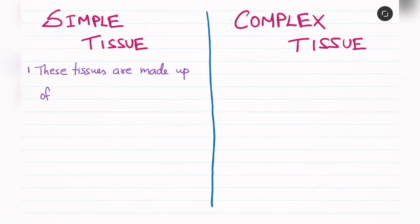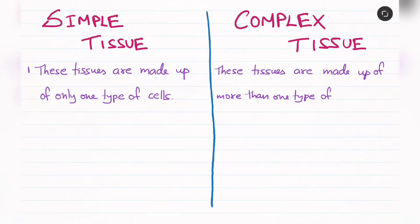Number one: simple tissue. These tissues are made up of only one type of cells. And complex tissues are made up of more than one type of cells.